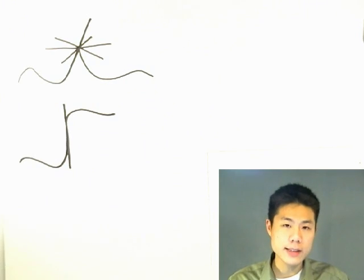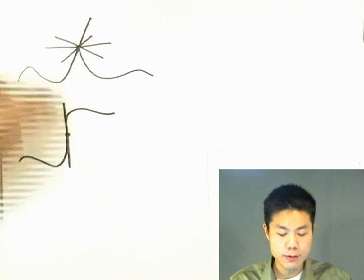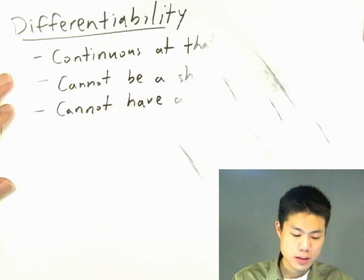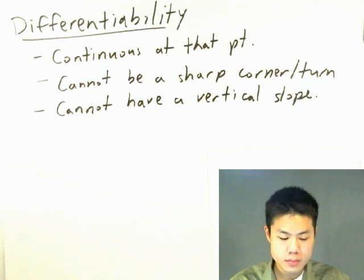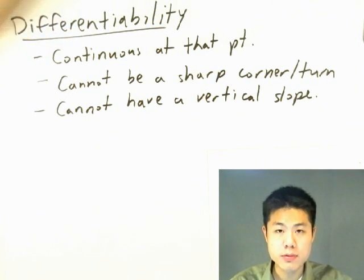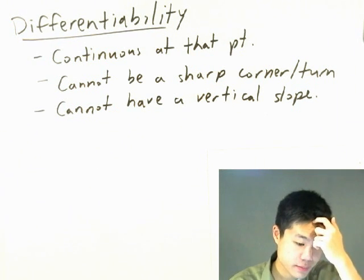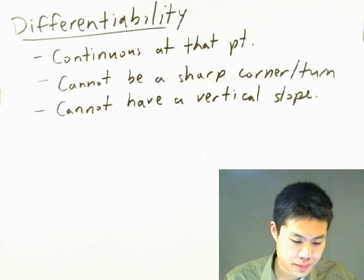Therefore, the derivative of the graph at that point at which it has a vertical line, that derivative is undefined. So if it satisfies these conditions, then the function is most likely differentiable at that point. Know this well.